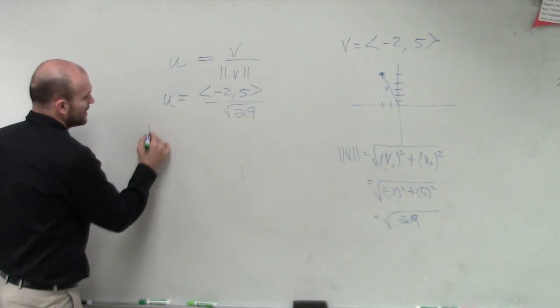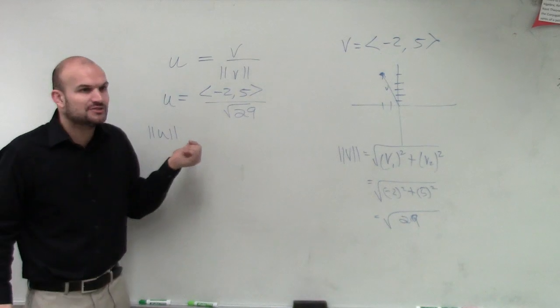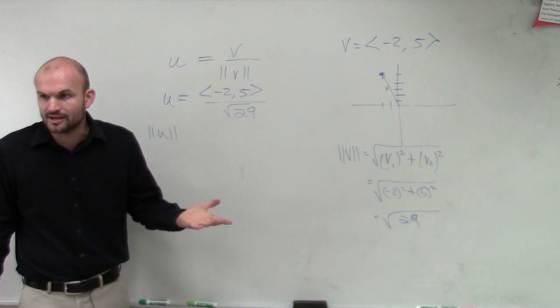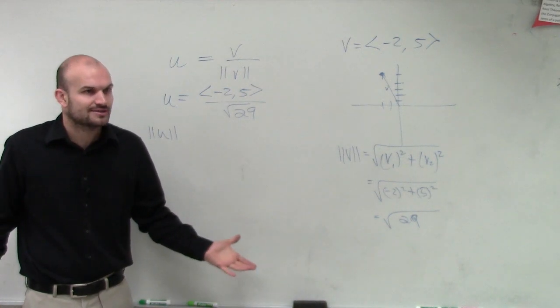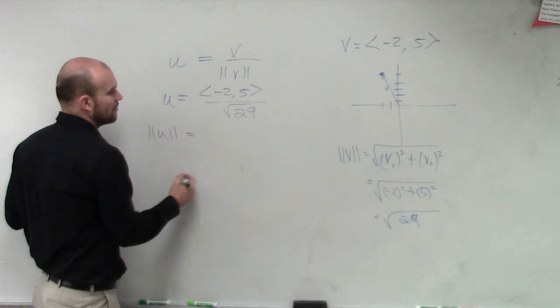So what if I wanted to find the magnitude of u? We know the magnitude of a unit vector has to be 1, right? Because that's the whole definition of a unit vector.